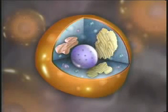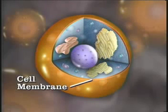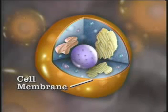Surrounding the outside of the cell is the cell membrane. This membrane is very thin, only about one one-hundred-thousandth of a millimeter thick. A photograph of a cell membrane taken with the help of an electron microscope reveals that it has three layers — two dark outer layers sandwiching a clear middle layer.